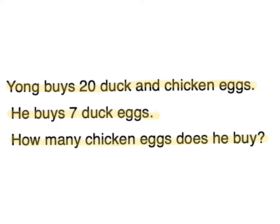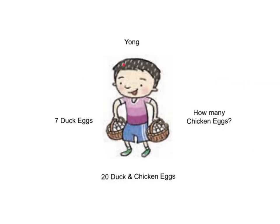Now let's try and imagine what that looks like. Here is Yong and we know he bought 20 duck and chicken eggs. So in these two baskets he has 20 eggs and seven of the eggs are duck eggs. How many chicken eggs did he buy?